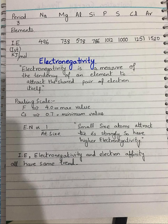The trend of electronegativity is just like ionization energy — it is inversely proportional to atomic size. Smaller-sized atoms have a stronger tendency to attract electrons, so small-sized atoms will have higher electronegativity. Ionization energy, electronegativity, and electron affinity — these three trends are the same. All three are inversely proportional to atomic size: smaller the atomic size, greater will be the ionization energy, greater will be the electronegativity, and greater will be the electron affinity value.